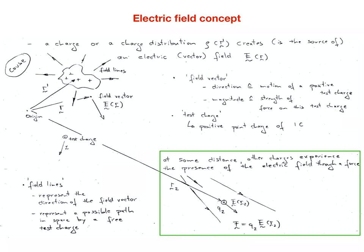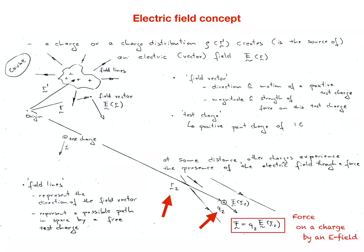This means that at some distance, as indicated by the green triangle here, other charges experience the presence of this electric field through a force. If there is some charge Q2 identified by the position vector R at some distance from the source charges, this charge Q2 will experience the electric field too. In particular, the electric field will exert a force on Q2 that is given by Q2 times the electric field at position R2.